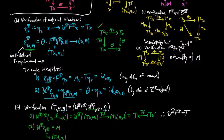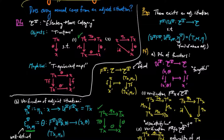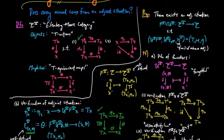By definition, the unit eta is the same. So the induced monad of this adjoint situation is equal to the monad t that we started with. Going back to the original question — does every monad come from an adjoint situation? — the answer is yes.